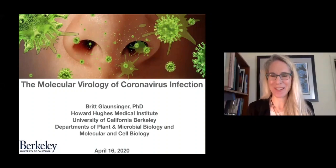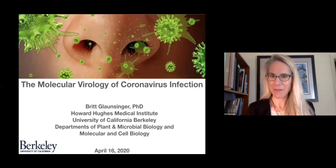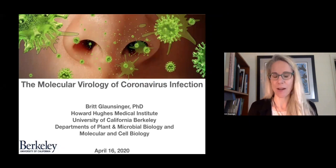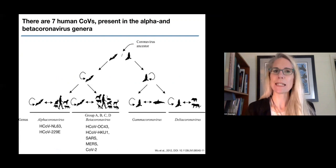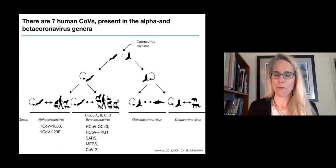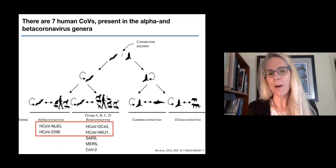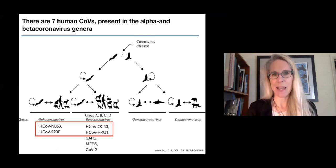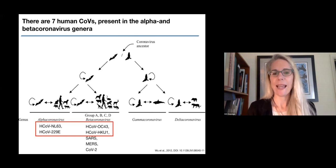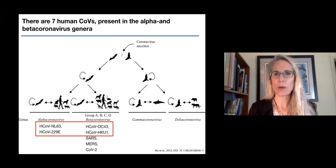Thank you Lauren, and hello everyone at Janelia or wherever else you're watching from. I'm really happy today to be telling you about what I think is both a daunting and fascinating virus. The focus of this lecture is the molecular virology of coronavirus infection. There are seven human coronaviruses, present in two of the four known genera of the Coronaviridae family: the alpha coronaviruses and the beta coronaviruses. Four of these seven viruses are widely circulating in the human population and have been for a long time: NL63, 229E, OC43, and HKU1. Collectively these four strains cause probably 10 to 30% of the common cold, a relatively mild upper respiratory tract infection.